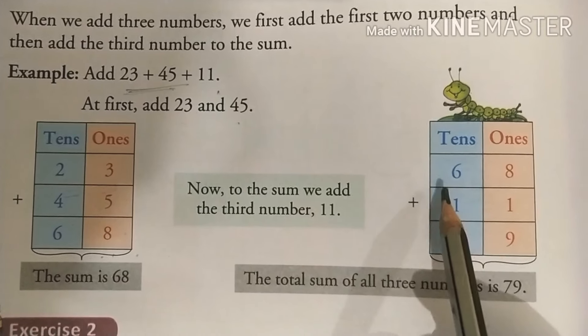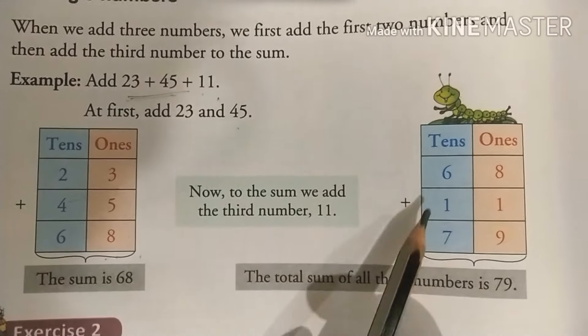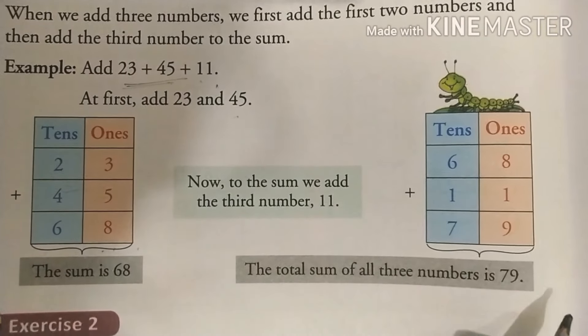So here you can see it clearly, 68 plus 11, yeh 11 aap kya hain pe hai. Then the final sum is 79.